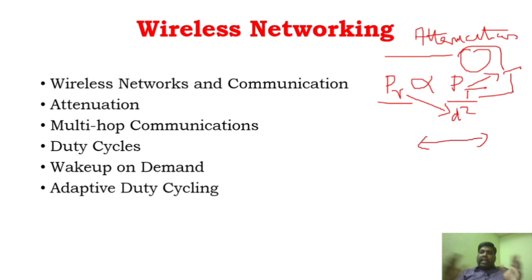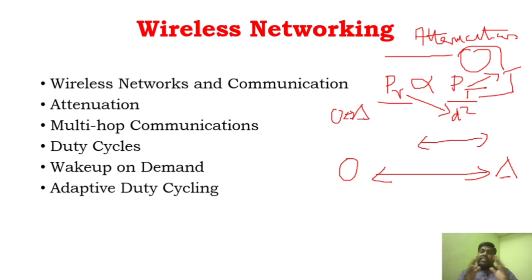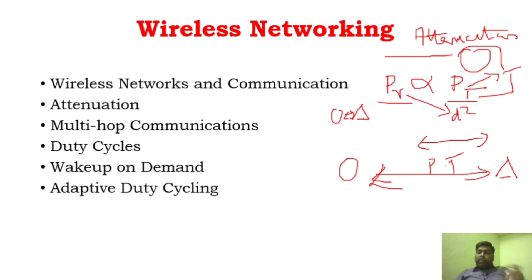When the distance between the sensor and the base station is very close, you will require only less transmission power. But if this distance becomes larger, this requires more transmission power. So whenever the distance between the sensor node and the base station increases, there will be an increase in transmission power. Instead of going for more transmission power, we will go for multi-hop communication.